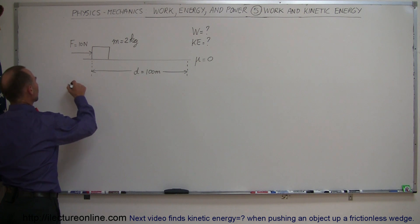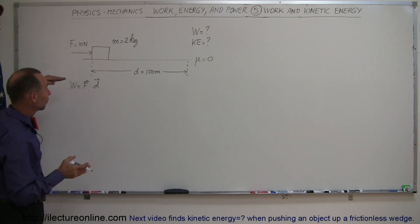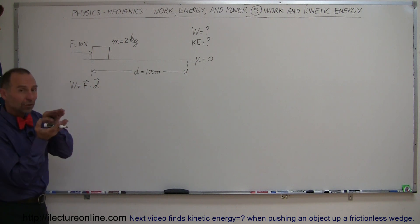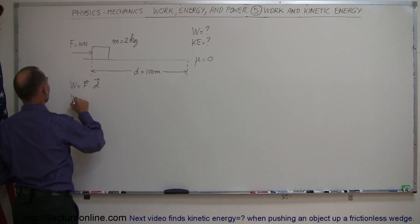So, starting with the equation work is equal to force times distance, and of course these are vector quantities, so we use the dot product. And in this case, since the direction of the force and the direction of displacement are the same, the angle between them is 0, the cosine of 0 is 1. And so, we can say that this is simply equal to force times distance,